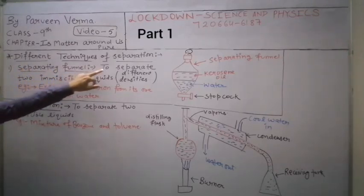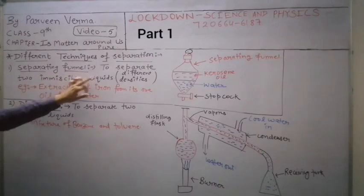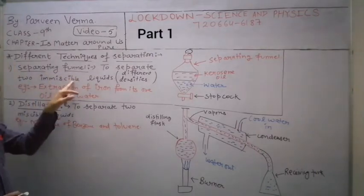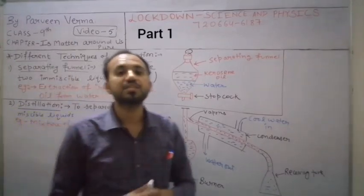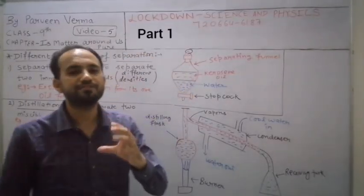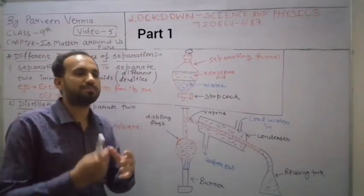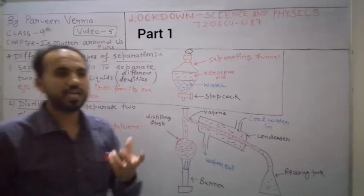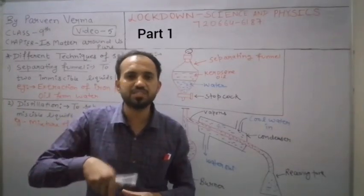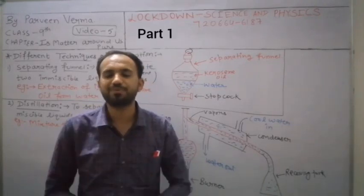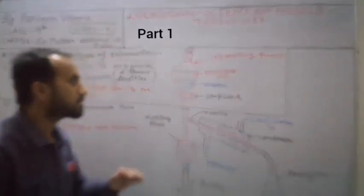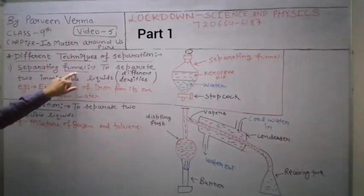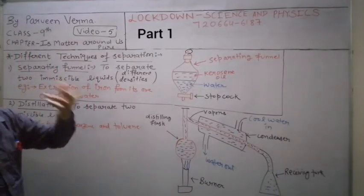A separating funnel is used to separate two immiscible liquids. Immiscible liquids means liquids that do not mix with each other. For example, if you pour oil into water and stir it, the oil and water will not mix - they remain separate. The separating funnel is a device or apparatus which is used to separate two immiscible liquids.